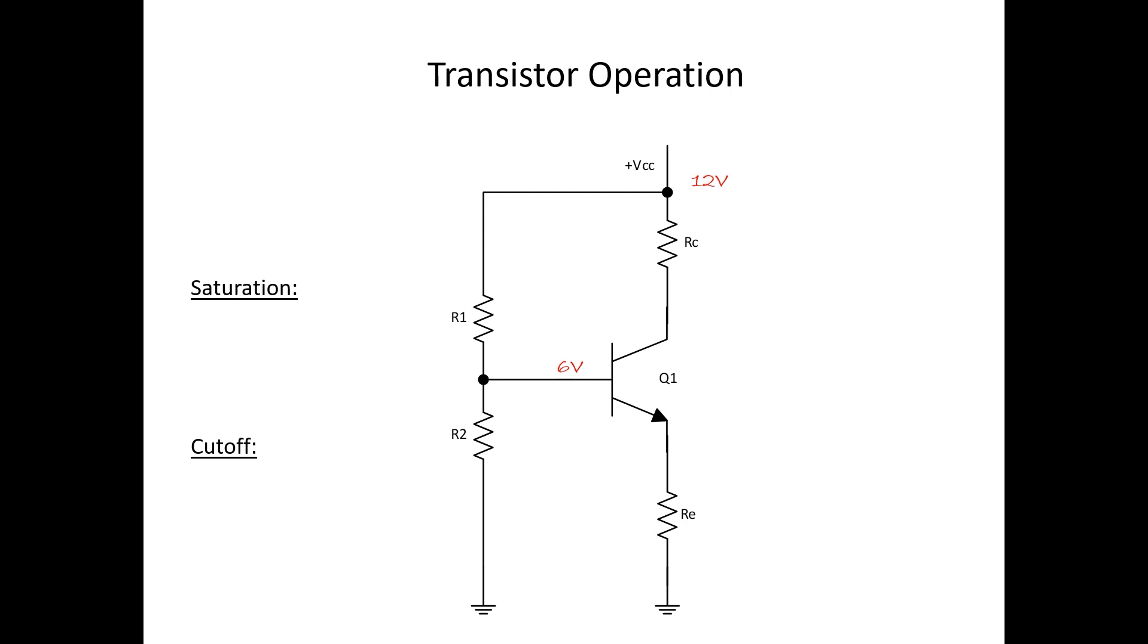Q1 is an NPN transistor, so because of that we know that it should have 0.6 volts less sitting on the emitter than what's on the base. So we should have 5.4 volts sitting on the emitter of Q1. Now essentially all we did at this point is allow Q1 to turn on or to conduct.